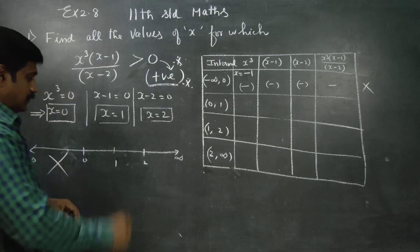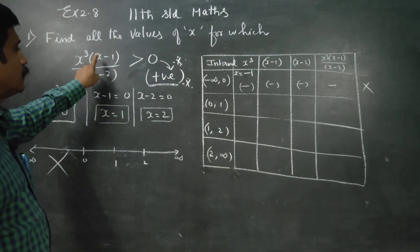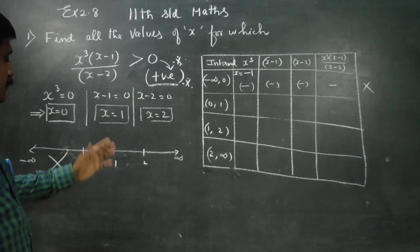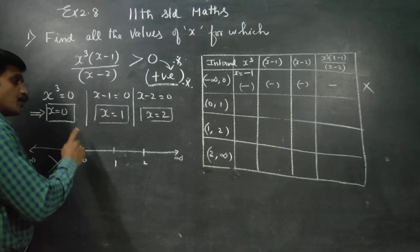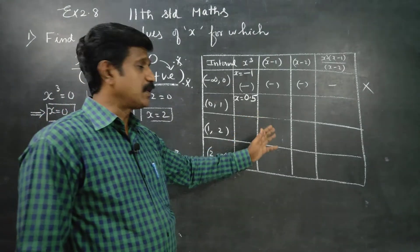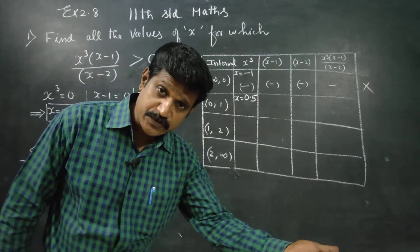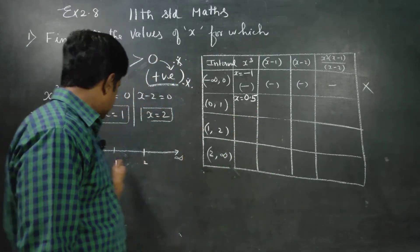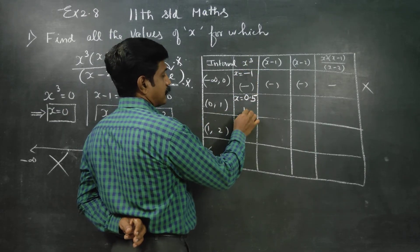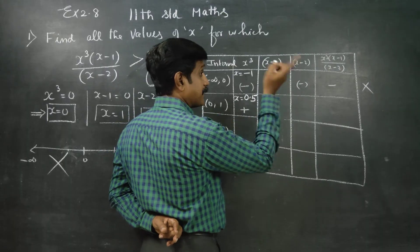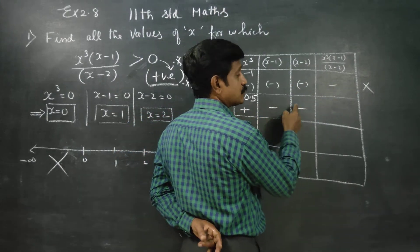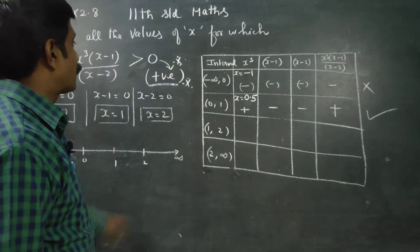Coming to the interval 0 to 1, I cannot use x equal to 1 because 1 minus 1 equals 0. So I use x equal to 0.5. We get 0.5 minus 1 equals minus 0.5 (negative), and 0.5 minus 2 equals minus 1.5 (negative). Positive times negative times negative gives a positive answer. This is the best interval — we have got a positive answer.